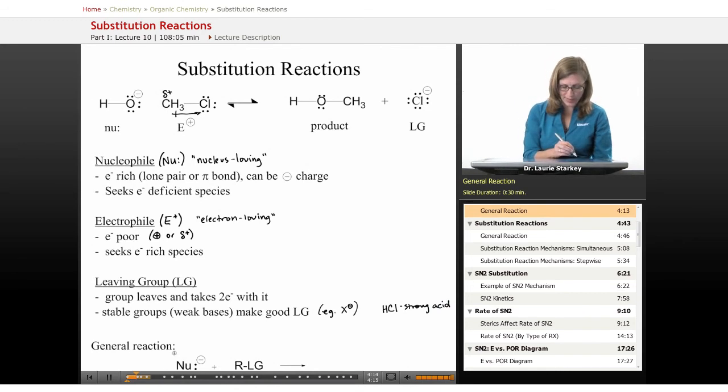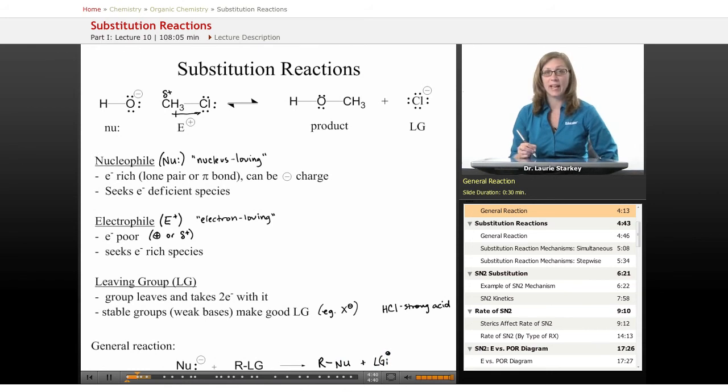So overall, the general reaction for the substitution reactions we're going to be studying in organic chemistry looks like this. There's some kind of nucleophile reacting with some kind of carbon chain. This R represents a carbon chain that has a leaving group on it. And when the reaction is done, that R group is going to have a nucleophile bonded to it in place of the leaving group. And the leaving group is going to now be on its own and typically with an extra lone pair and a negative charge.